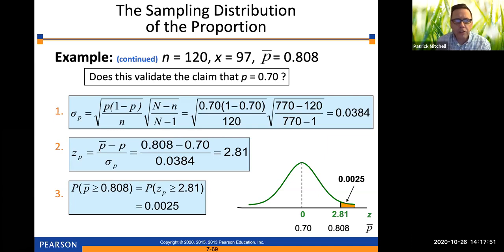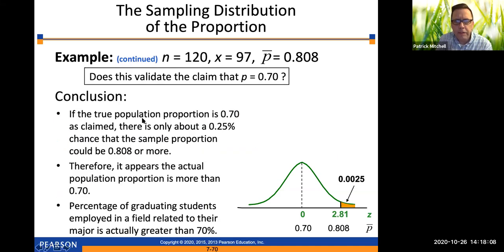So in this case, I would say that this college is actually selling themselves short. They're claiming that 70% of their graduates are getting jobs in their fields. And the evidence actually suggests that that proportion is much higher than what they're saying. Because if the true population proportion is 0.7, as claimed, there is only about a 0.25% chance, a quarter of 1% chance that the sample proportion could be 0.808 or more. Therefore, it appears the actual population proportion is more than 0.7. So the percentage of graduating students employed in a field related to their major is actually greater than 70%. That's definitely the way it looks.